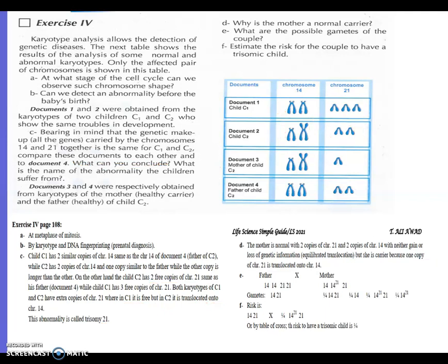Let's continue. There's a small error in the question here. Before, documents 3 and 4 were respectively obtained from karyotypes of mother healthy carrier and father healthy of child C2. This should have been given here above before we made the comparison. Why is the mother a normal carrier? Look at the mother. This is the mother of child C2.